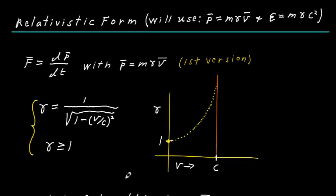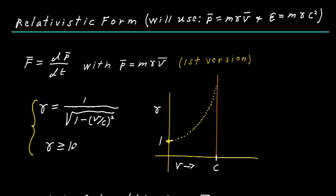The gamma factor is a function of speed: gamma equals 1 over the square root of 1 minus (v/c) squared. When v equals zero, gamma equals 1. As v increases, the ratio v/c increases, the denominator gets smaller, and gamma gets larger. When v equals c, you get a zero in the denominator — a vertical asymptote — so as v approaches c, gamma tends toward infinity. From the diagram, gamma is always greater than or equal to 1.